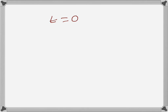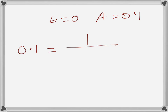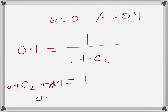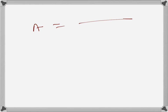Applying the initial condition: when t = 0, A = 0.1. Substituting: 0.1 = 1 / (1 + C₂). So 0.1(1 + C₂) = 1, giving 0.1·C₂ = 0.9, therefore C₂ = 9. The expression becomes A = 1 / (1 + 9·e^(-kt)).